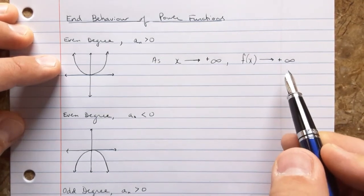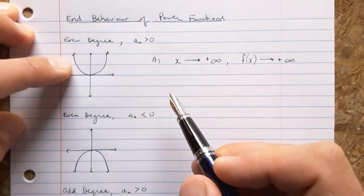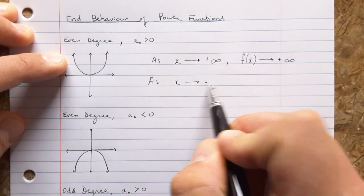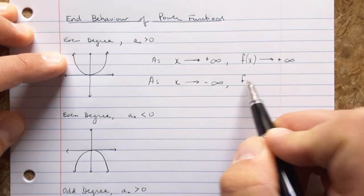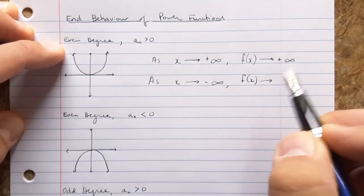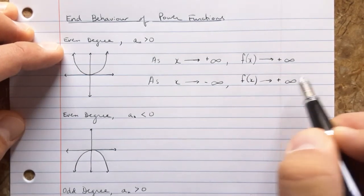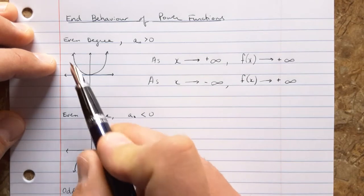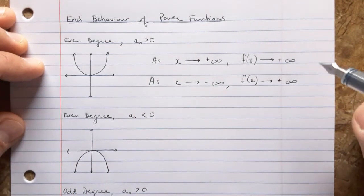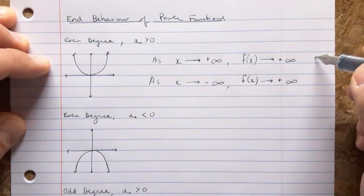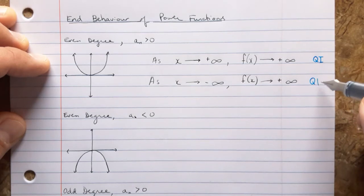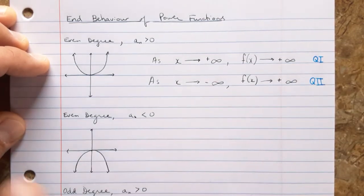So that tells us what happens on the right-hand side of the graph. Now we also would write down what happens on the left-hand side of the graph. As x goes to negative infinity, f of x goes to, well, it's also going up, so that's positive infinity again. So I can tell by reading this what kind of graph I must have here, up to the right and also up to the left. So again, another way to write this is to say that this goes up into quadrant 1, which we use with a Q and a capital letter I, the Roman numeral 1, and this is quadrant 2. That's where it ends up. It ends up in quadrant 1 and quadrant 2, so you know it kind of points up in each direction.